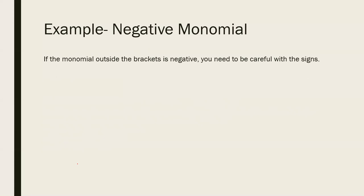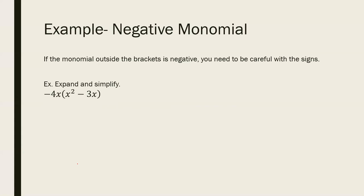Now, negative monomials — if there is a negative sign in the monomial, you're going to follow the same steps but be extremely careful with the signs. This is actually similar to what we saw when we talked about adding and subtracting polynomials. When you subtract, I mentioned the trick of imagining a negative 1 outside the brackets and multiplying by negative 1 — it's the same idea here. The signs will switch. Let's look at an example: negative 4 multiplied by (x² minus 3x).